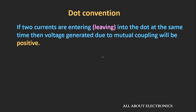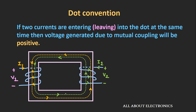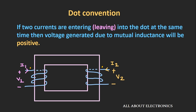If two currents are entering or leaving the dot at the same time, the voltage generated due to mutual coupling will be positive. Taking the first example we had already seen — the flux generated by those coils adds together, so the induced voltage due to mutual coupling is positive. If we simply put a dot on the two sides of the coil, then by using dot convention we can easily find the polarity. As you can see, currents I1 and I2 are entering the dots, so the induced voltage due to mutual inductance will be positive.